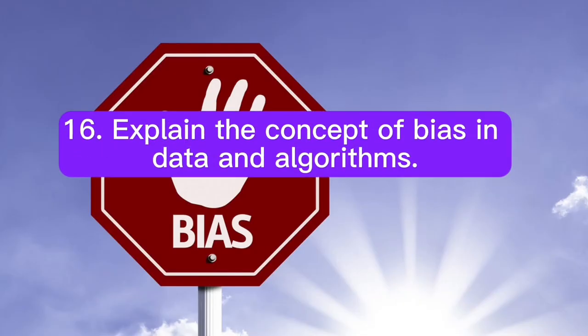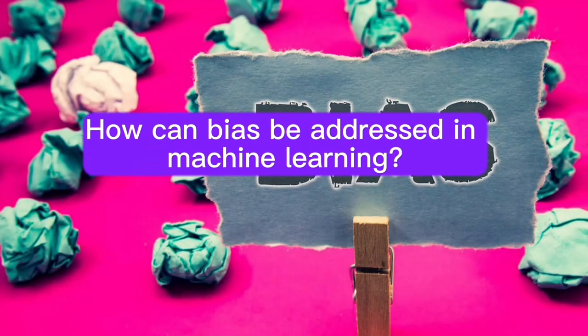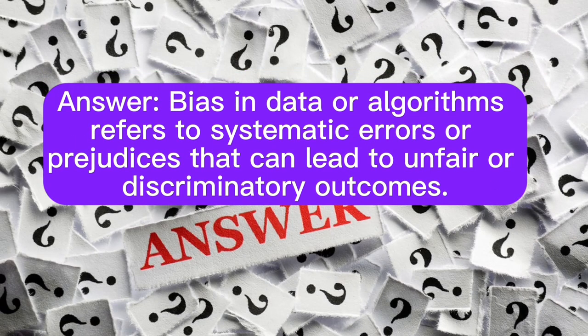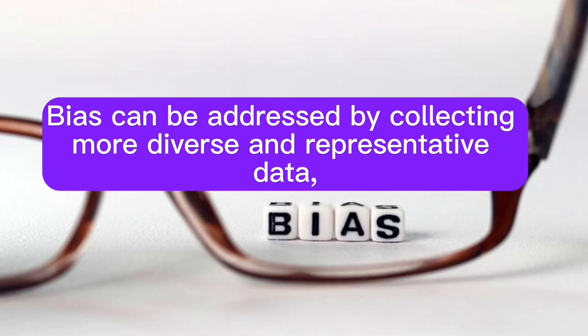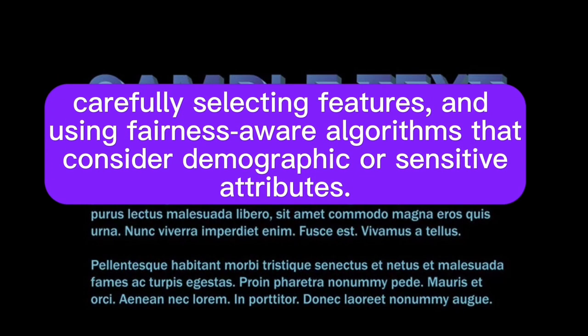Question 16: Explain the concept of bias in data and algorithms. How can bias be addressed in machine learning? Answer: Bias in data or algorithms refers to systematic errors or prejudices that can lead to unfair or discriminatory outcomes. Bias can be addressed by collecting more diverse and representative data, carefully selecting features, and using fairness-aware algorithms that consider demographic or sensitive attributes.